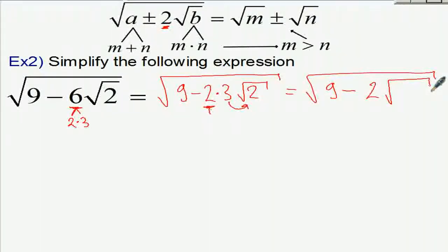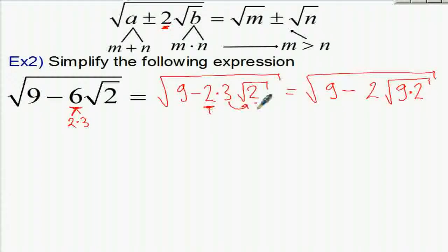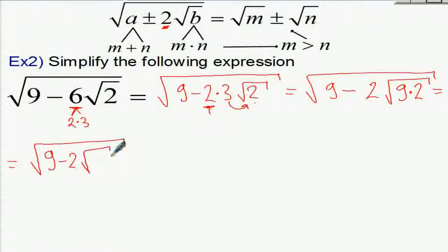When we move 3 inside the square root, we need the number whose square root gives 3 — that is 9, since 3 squared is 9. So 3 outside becomes 9 inside, and multiplying by the existing 2 inside gives 9 times 2 equals 18. The expression becomes square root of 9 minus 2 times square root of 18.